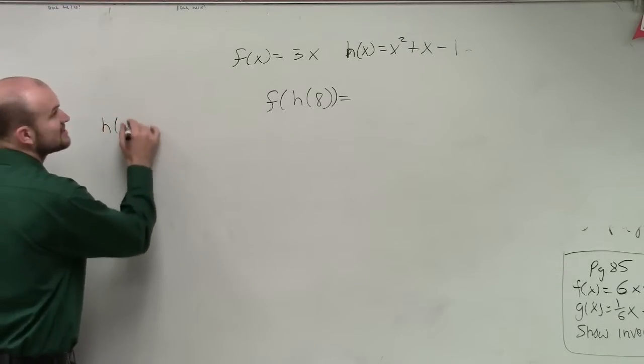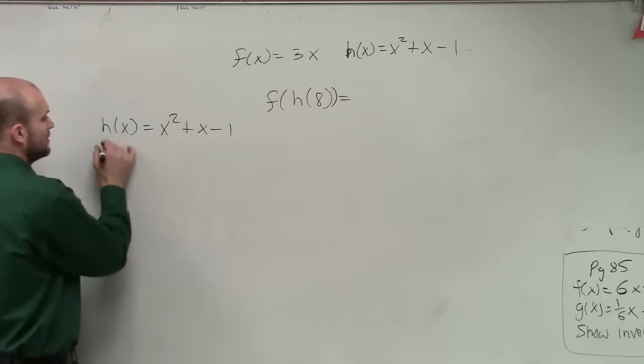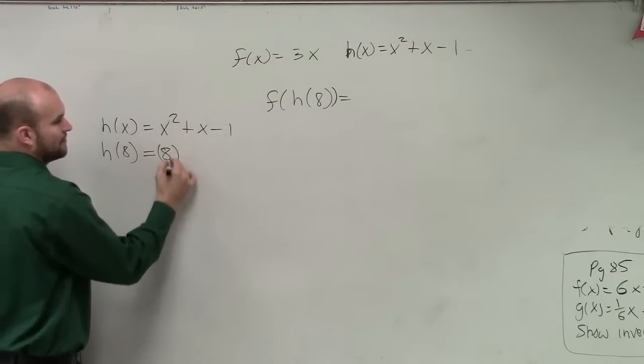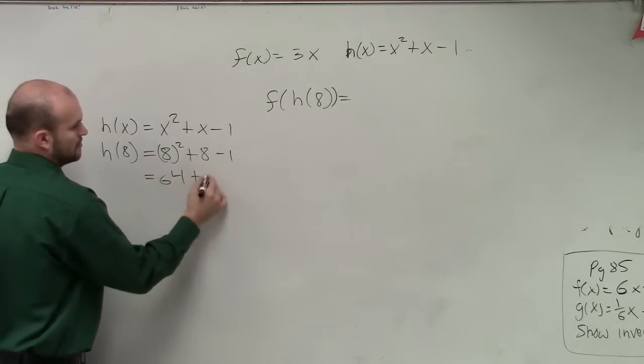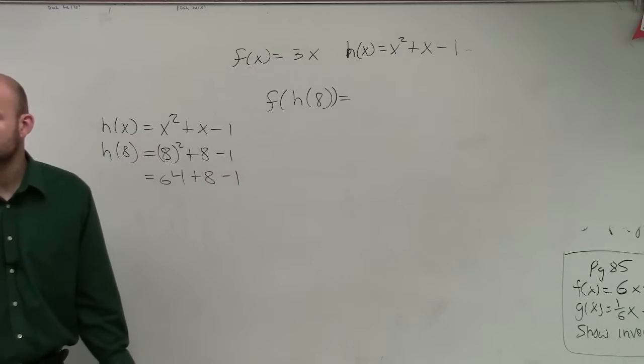So if I know that h of x is equal to x squared plus x minus 1, h of 8, we're just going to plug the 8 in for the x.